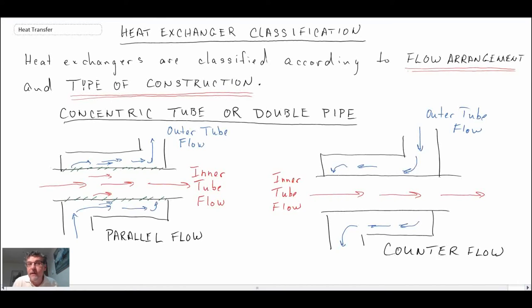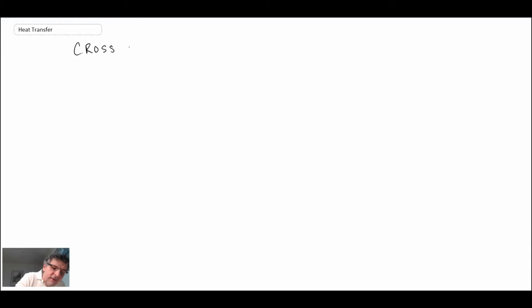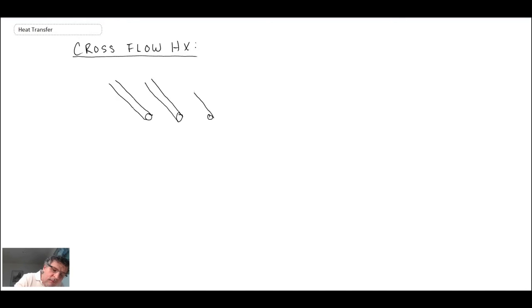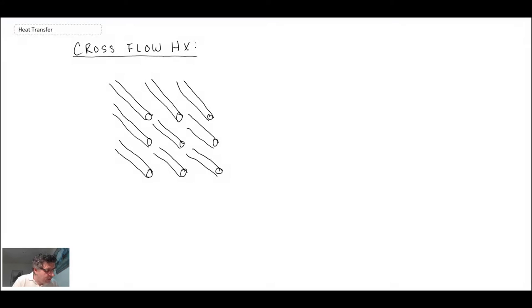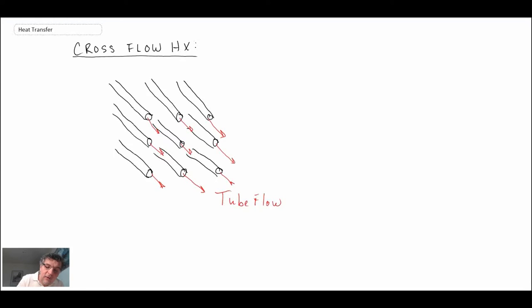Those are two examples of the simplest heat exchanger — the double pipe or concentric tube heat exchanger. Another flow arrangement and type of construction is the cross flow heat exchanger. This is a different type of construction where you have a tube bundle, with flow coming out of each tube, and then perpendicular or near-perpendicular to that you have a cross flow.